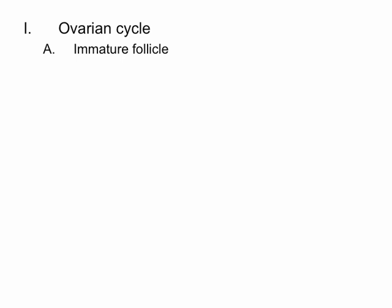We begin the ovarian cycle with what's happening in the ovary. We start with what we call an immature follicle. These have primary oocytes that are formed before birth and are located in the ovaries. Ladies, you are born with all of the eggs that you will ever have — they're just immature. There are some cells around the oocytes called granulosa cells.